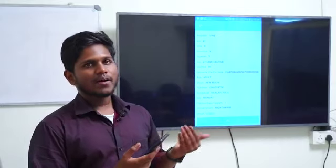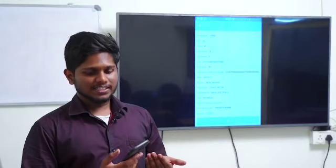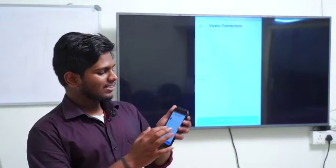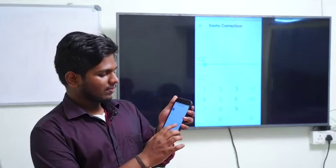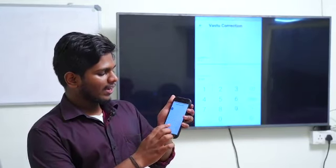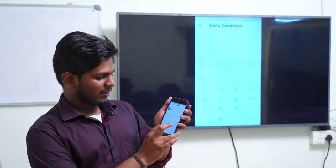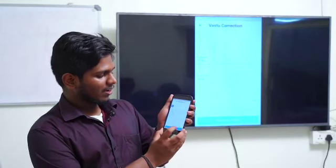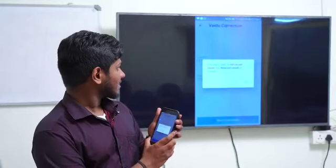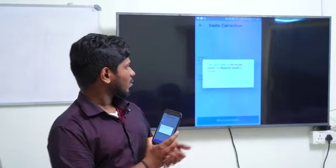But if we change the value and instead of 11.82 I am typing 86, and I am pressing the check vastu status, it says the input data is not as per vastu.